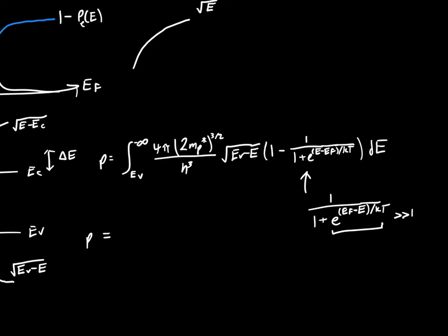Once we do the integral, we'll get that p is equal to basically the same expression we had before: 2 times (2π times the effective mass of the hole times kT divided by h squared) to the three halves times e to the—and now we have to be kind of careful—